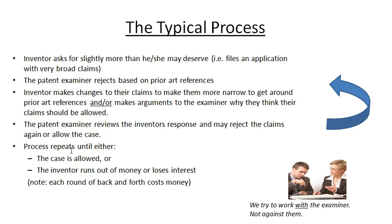This process can go back and forth until either the case is allowed or the inventor runs out of money or loses interest. Each round of back and forth with the patent office is going to cost you money in both filing fees, patent office fees, as well as attorney or agent time. That's another reason why patents are so expensive — it's quite time consuming to review maybe five or ten huge patents found by the examiner and prepare your response. Multiply 10 to 20 hours by a billing rate of $150, $250, $350, up to $500 or $600 an hour, depending on what sort of patent attorney you're working with, and you can see how the prices add up fairly quickly.